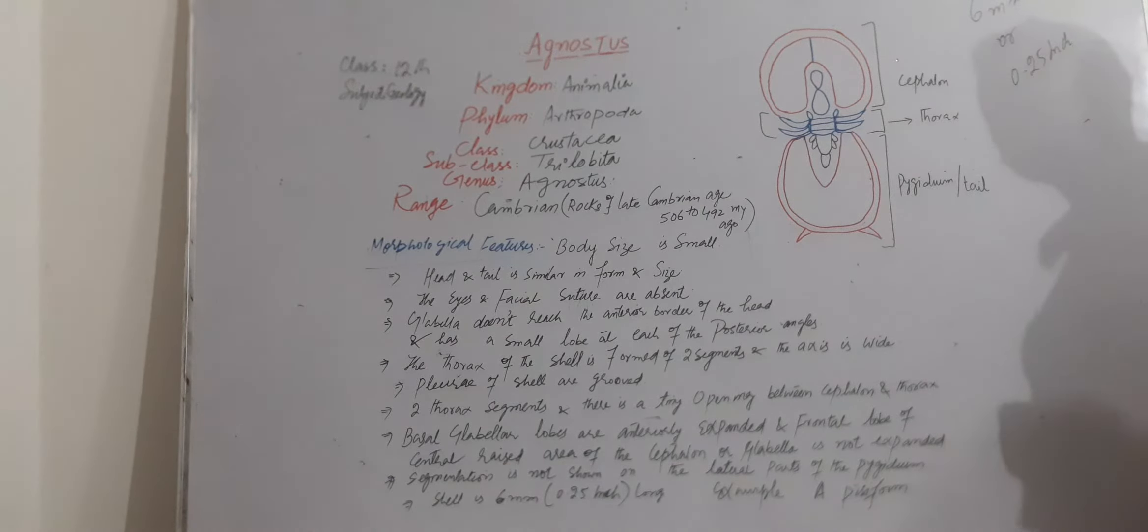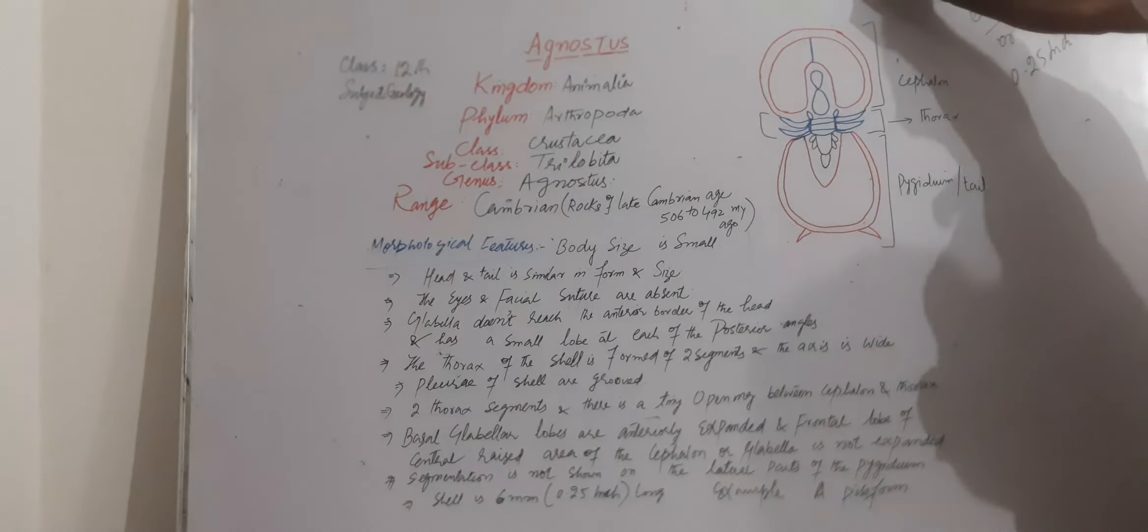So whole shell length is 6mm. Example of this fossil Agnostis is Agnostis pisiformis.